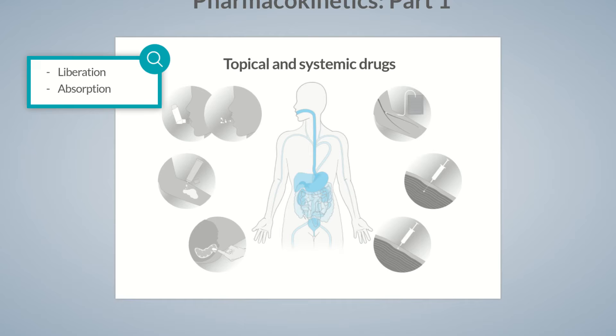One example are painkillers, which are transported to the central nervous system regardless of whether they're administered intravenously, peroral, or as a patch. Which dosage form is most suitable for a patient depends especially on the desired drug concentration at the site of action, as the drug's concentration strongly depends on its absorption and distribution.